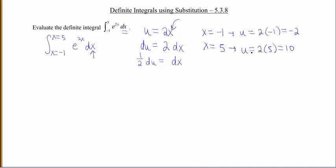So now I'm gonna go ahead and rewrite my whole integral in terms of u's. So first, let's write out those endpoints that we just changed. So u is now negative 2, and u is a positive 10. My e function didn't change, because that was my outside function.